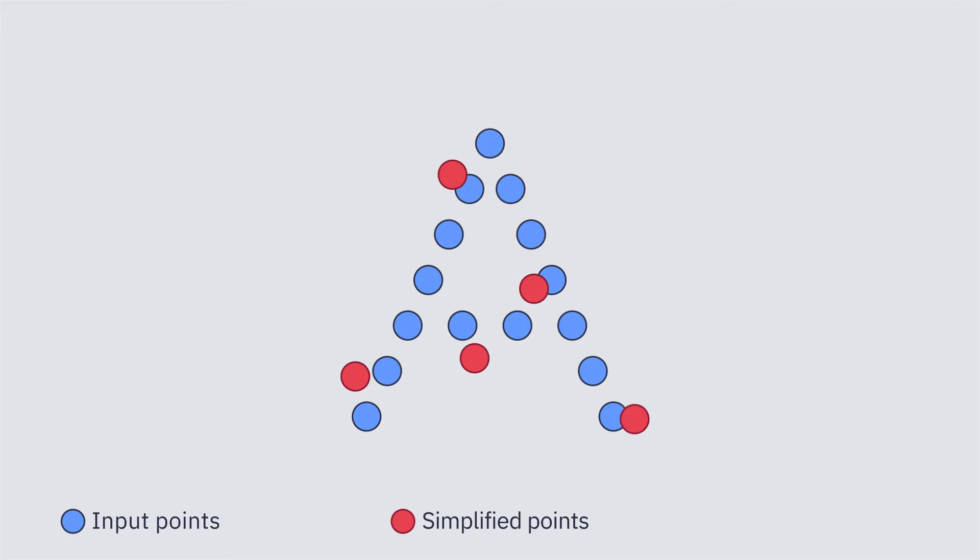We are interested in sampling, meaning, selecting points from the input. However, the sampling operation is non-differentiable. Since it's like a step function, either a point is sampled or not.